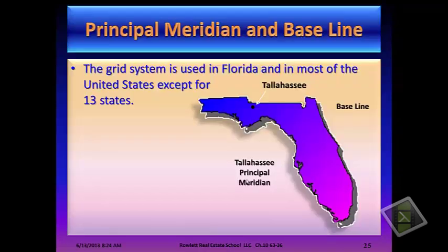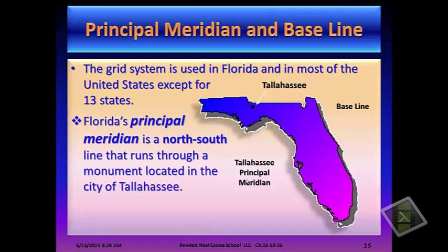This slide is where we left off on our previous video, so this is where we're going to pick it up. The grid system is used in Florida and in most of the United States except for 13 states. Florida's principal meridian is a north-south line that runs through a monument located in the city of Tallahassee, Florida. In fact, there is a street that runs north and south right past the Florida State House in Tallahassee that is named Meridian Street. And that monument sits right on the State House line.